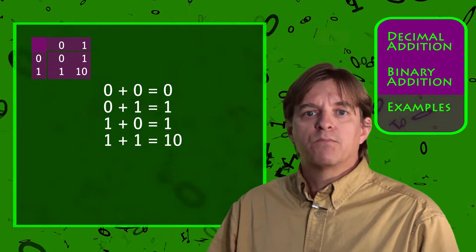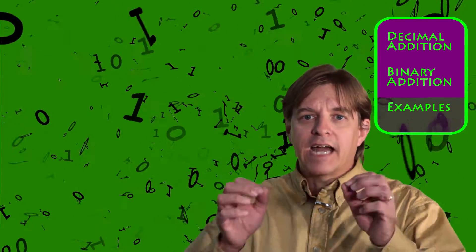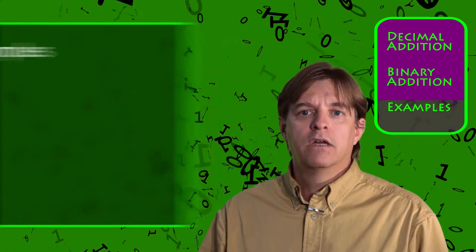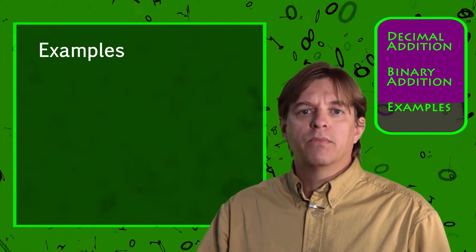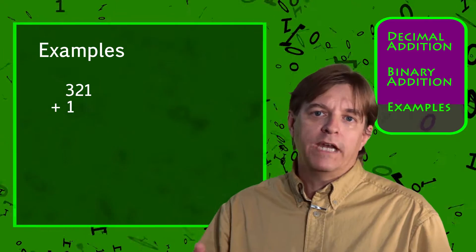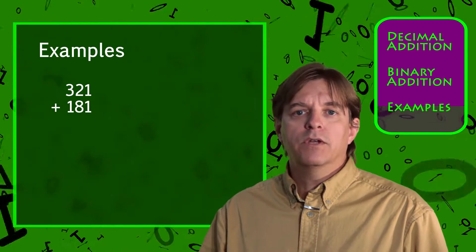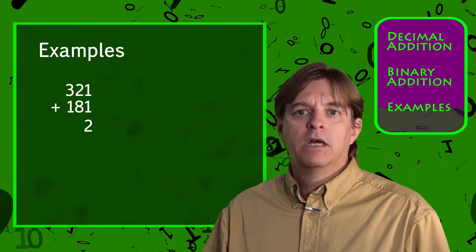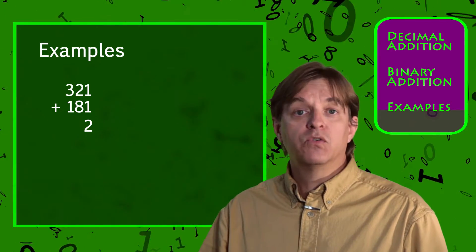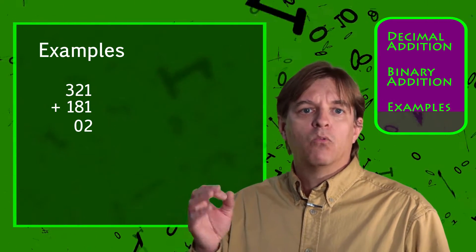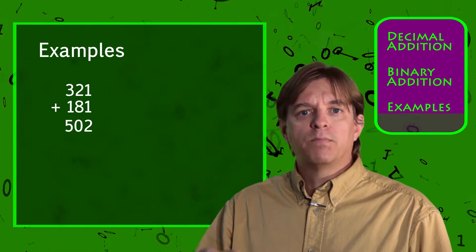Once you know this table, the process of adding in binary is exactly the same as adding in decimal. For example, let's look at the decimal numbers 321 plus 181. Starting with the units, 1 plus 1 equals 2, 2 plus 8 equals 10, so write 0 and carry a 1, 1 plus 3 equals 4, 4 plus 1 equals 5.